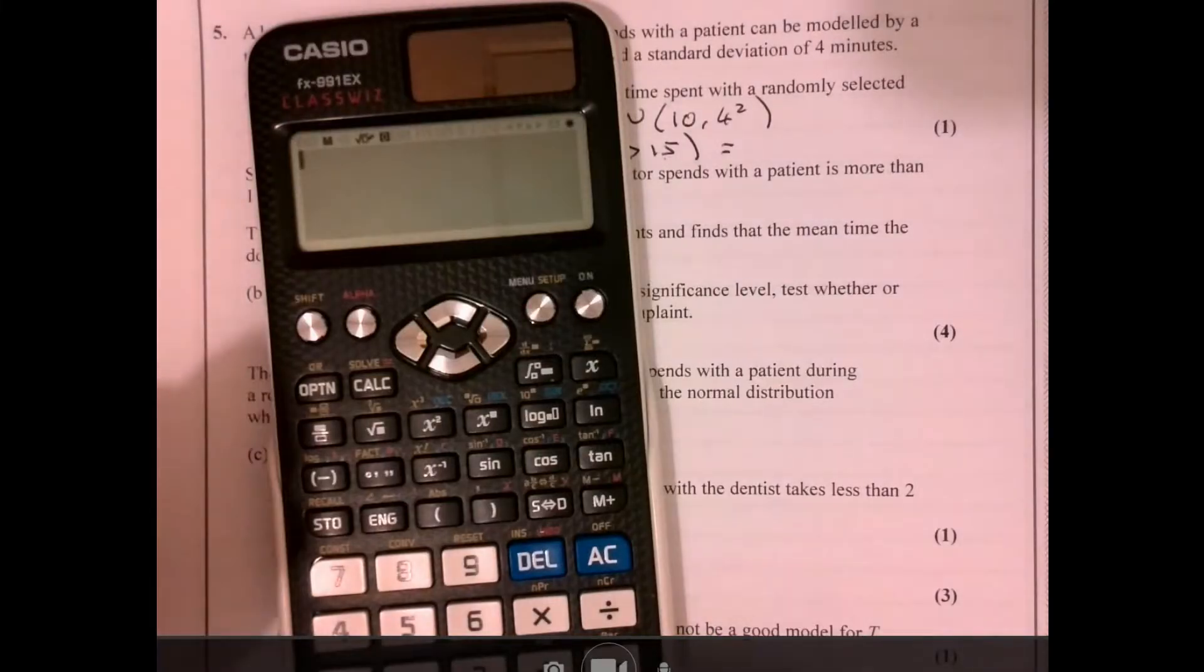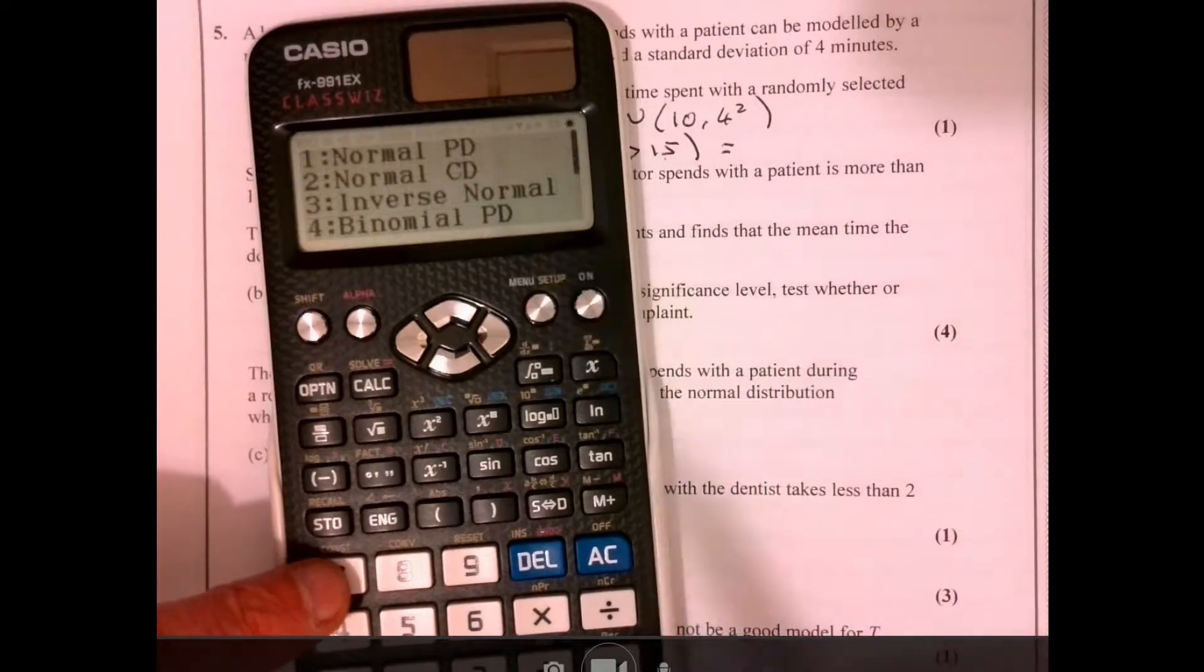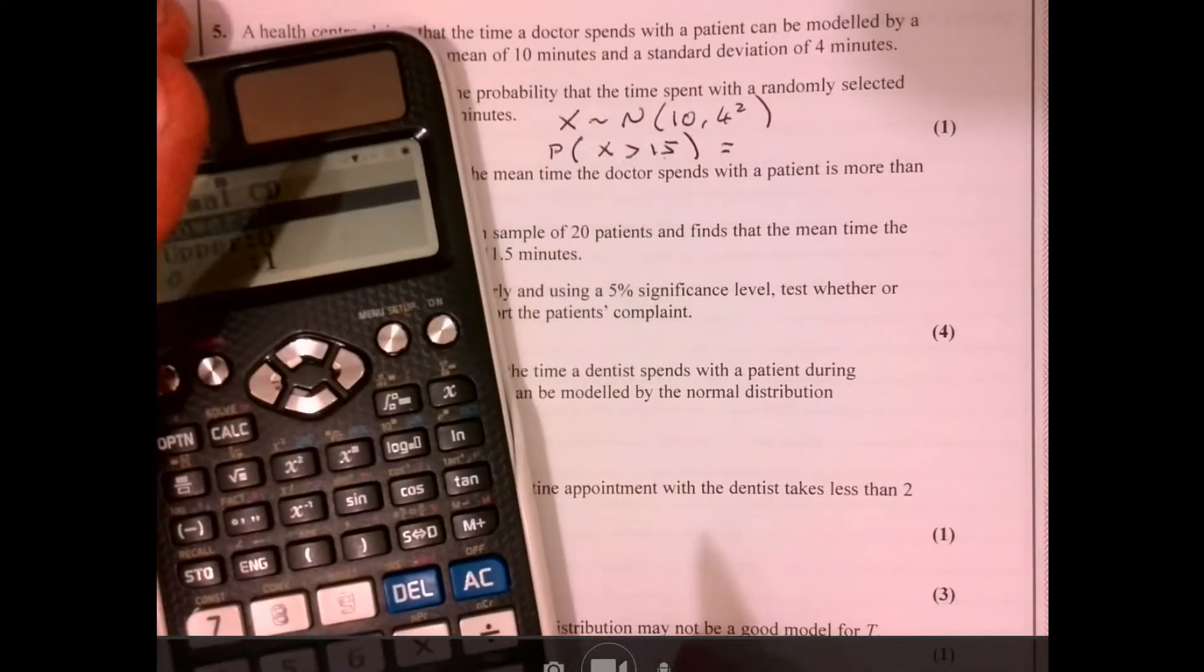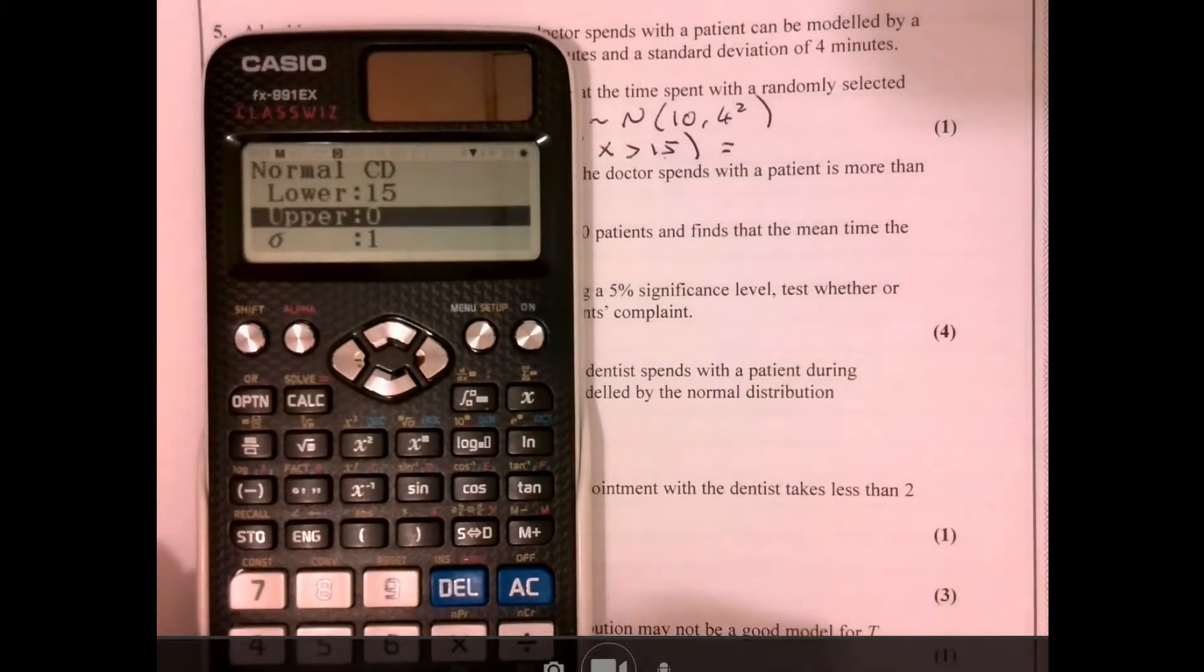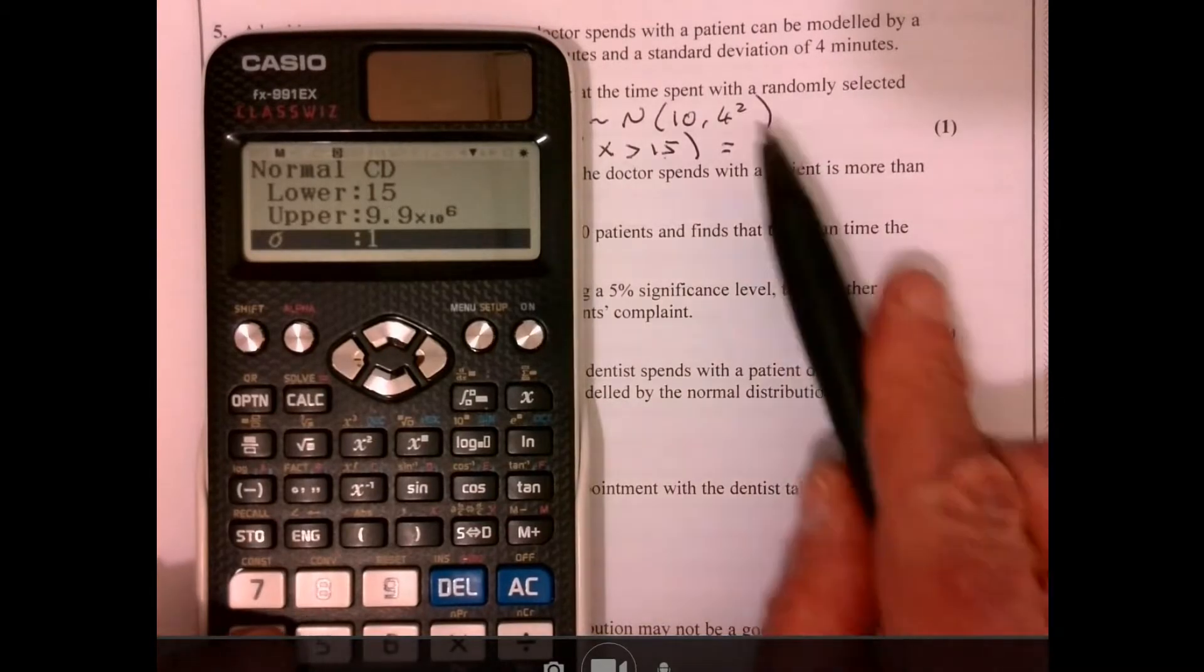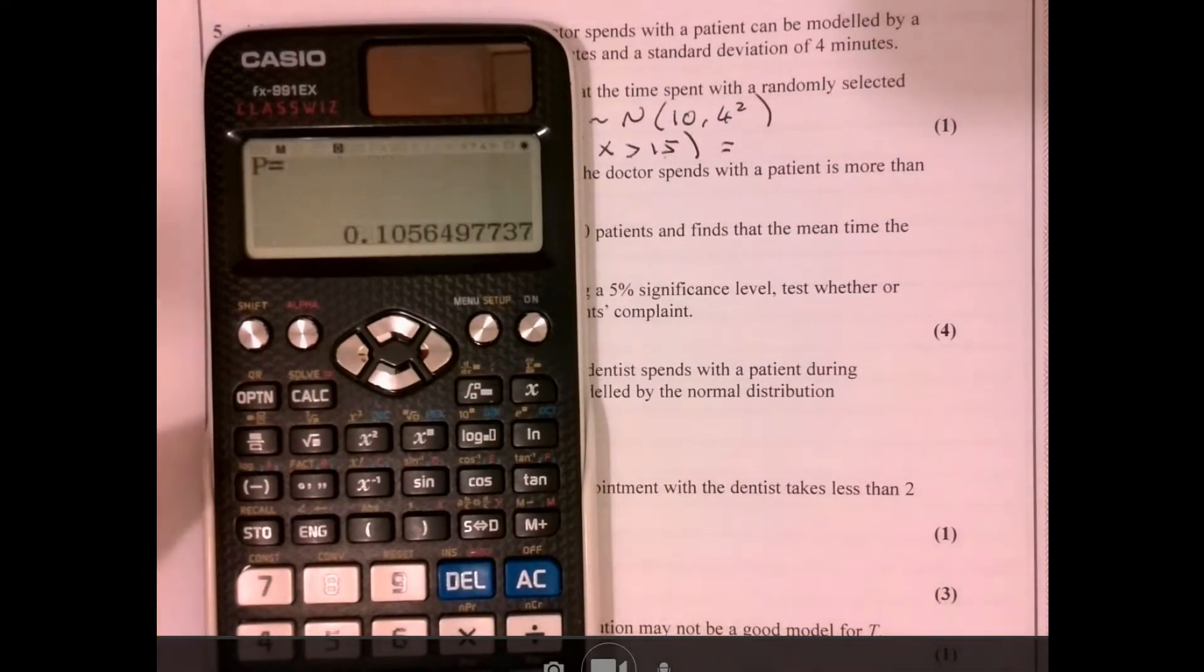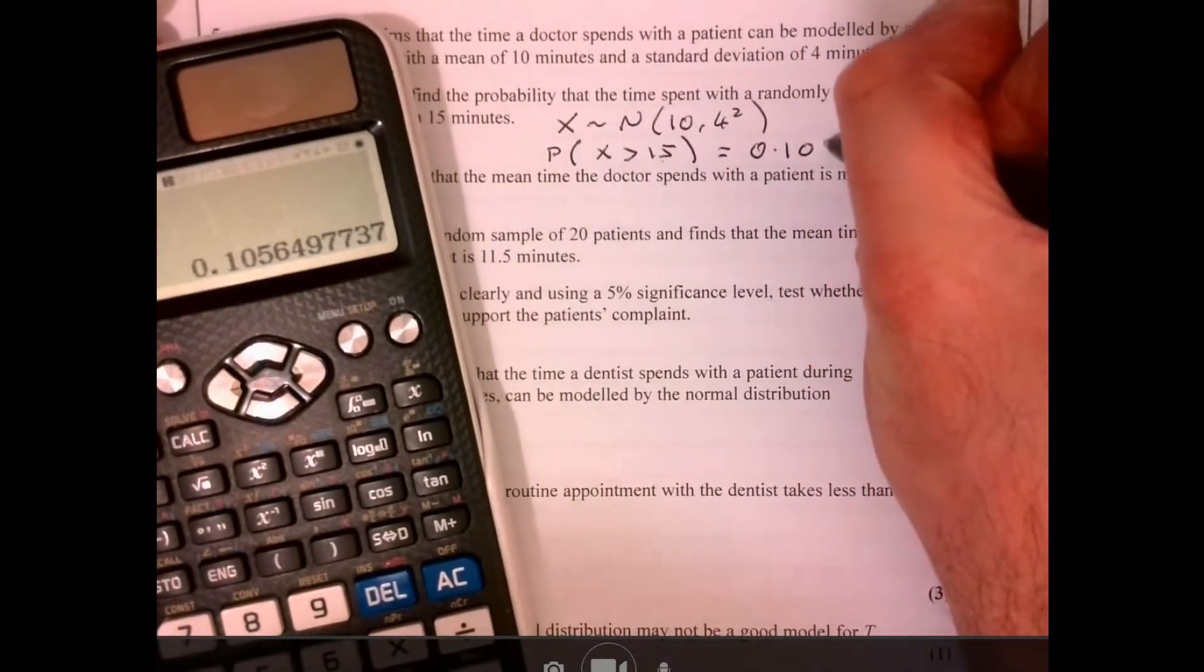You're going to use your calculator. Just go through, pick number 7. And then we need number 2, normal CD. That's cumulative. Now the lower here is 15. The upper, I just put a really high number in. Standard deviation there is 4. And the mean is 10. Easy as that. There you go. And there's our answer. So 0.106.